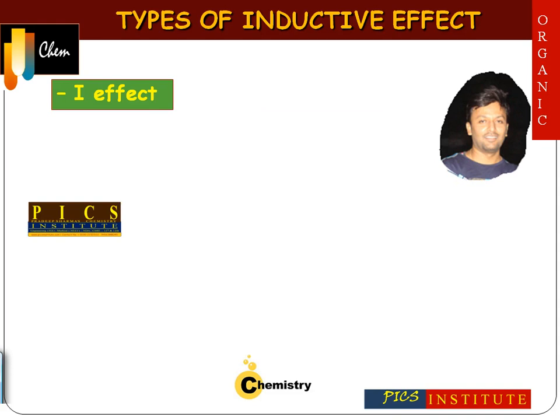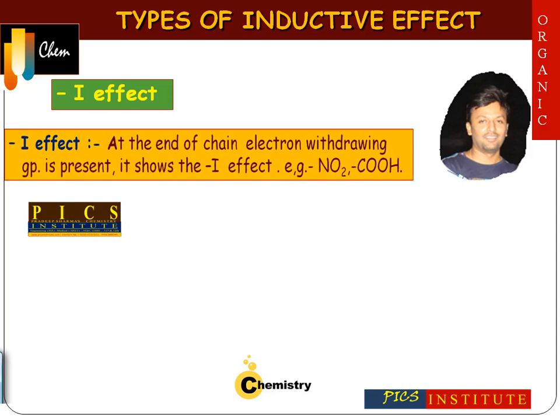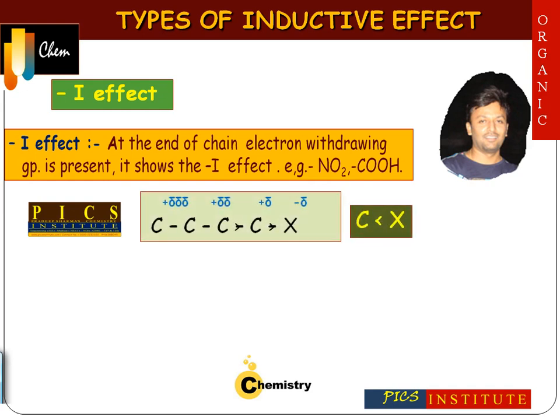First we will understand minus-I effect. Minus-I effect is shown when at the end of the chain an electron-withdrawing group or a more electronegative atom is present — for example, NO2, COH, etc. As seen in this example, element X attracts electrons toward itself, so it is an electron-withdrawing group, and hence the effect shown by atom X is electron-withdrawing inductive effect, or minus-I effect.